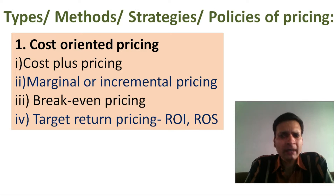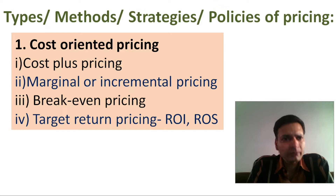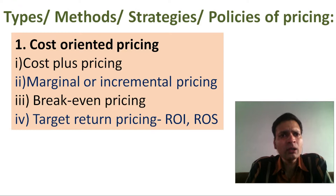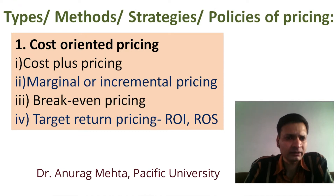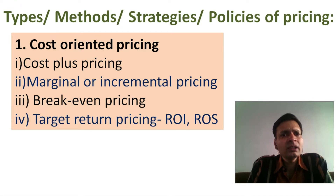There are few popular methods used across the world. The first method is cost-oriented pricing. As the name suggests, the price is based on the cost of the product — meaning the cost of production or the cost of goods sold. Under this, the first approach is cost-plus pricing, where the cost per unit is calculated and a desired percentage of profit is added.